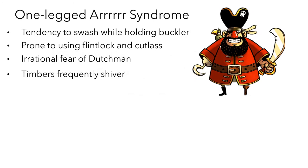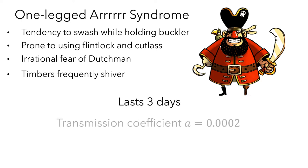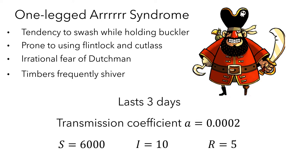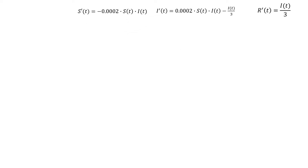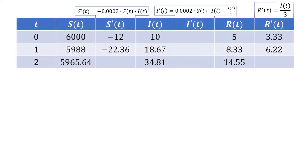In previous videos, we imagined a disease called the one-legged R syndrome and some information about how it acted and how many susceptible, infected, and removed individuals there were when we started collecting data. We built a model of differential equations and used this to create a table. As we were creating the table, we used the central relationship that the amount of change in the number of susceptible individuals could be approximated by multiplying the rate at which the number was changing by the amount of change in time. In our examples, we were using a delta t of one day.